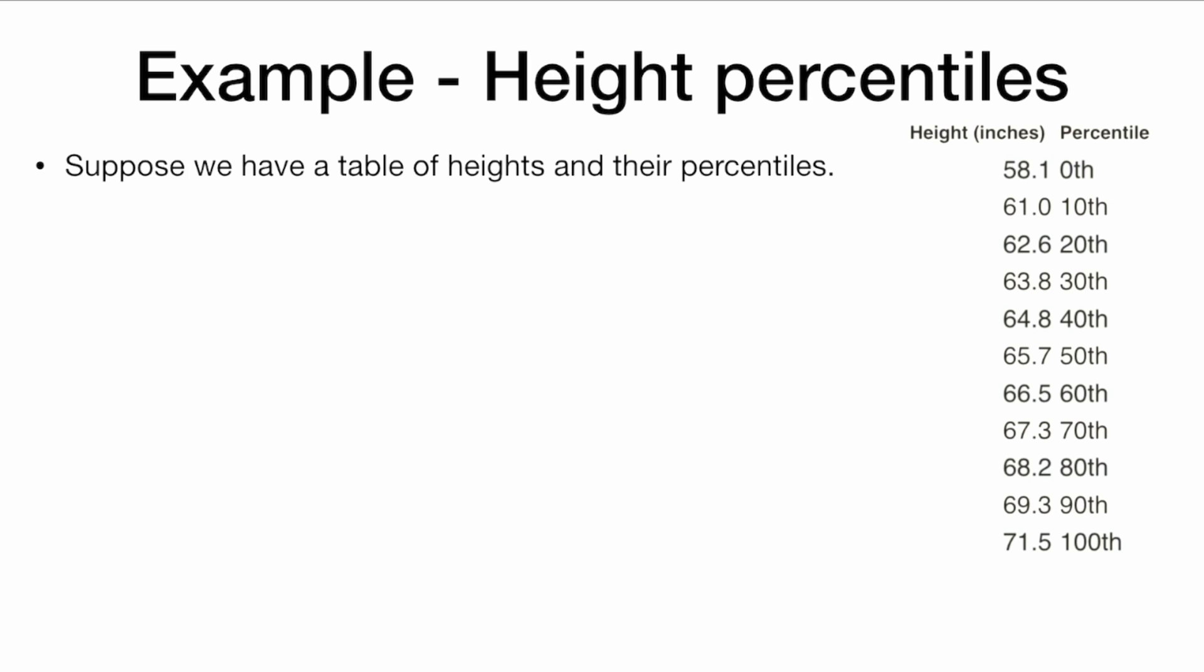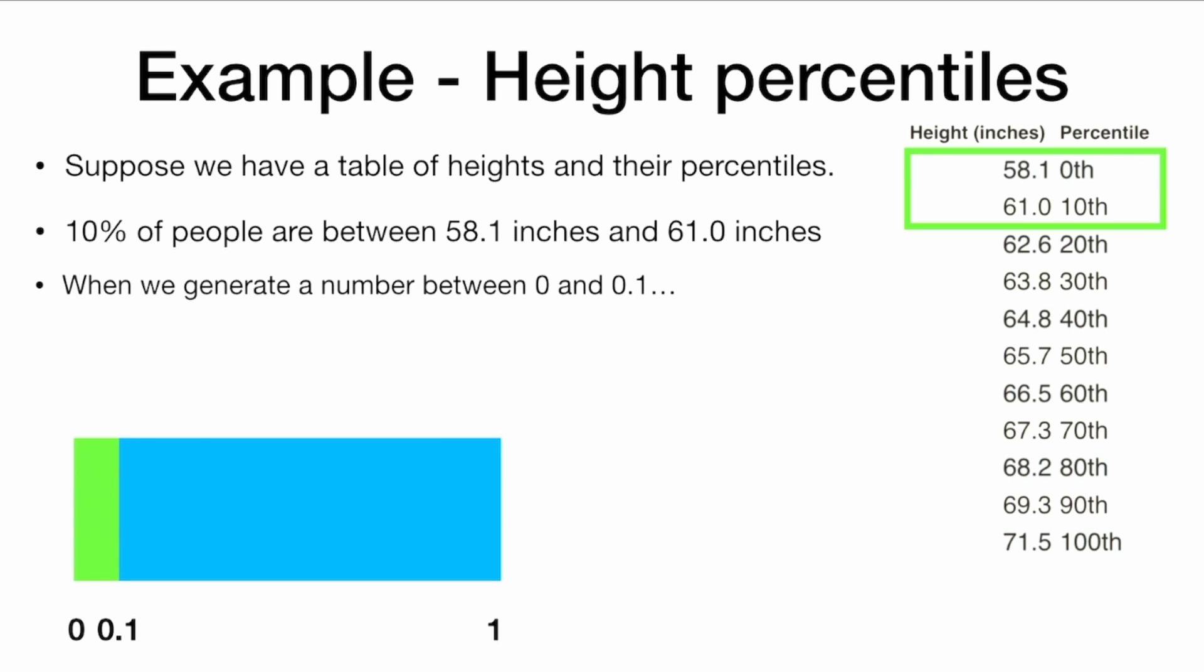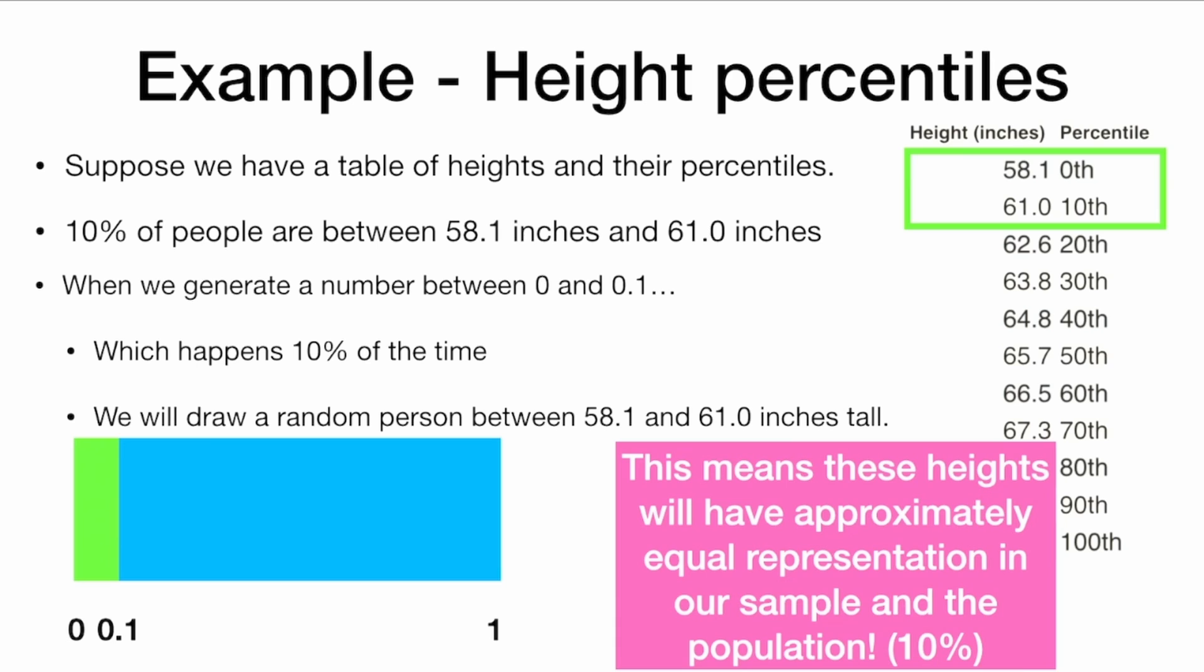Here's an example involving height. Suppose that we have a table of heights and their percentiles. 10% of people are between 58.1 and 61 inches. Now when we generate a number between 0 and 0.1, which happens 10% of the time, we will draw a random person between 58.1 and 61 inches tall. This means that these heights will have approximately equal representation in our sample and in the population. 10%.